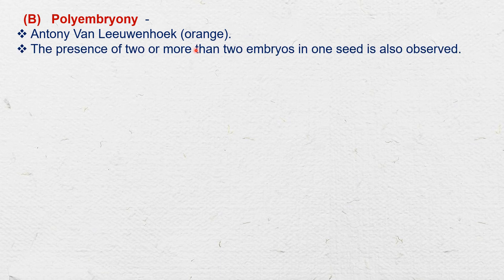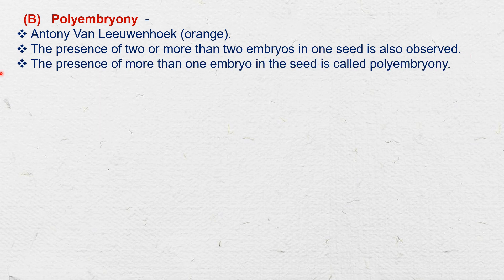The second mode is polyembryony. Polyembryony was first reported by Anthony van Leeuwenhoek in the seed of orange. In some plants, the presence of two or more than two embryos in one seed is also observed. Therefore, the presence of more than one embryo in a seed is called polyembryony.